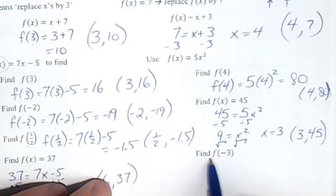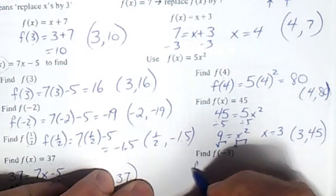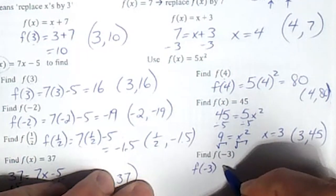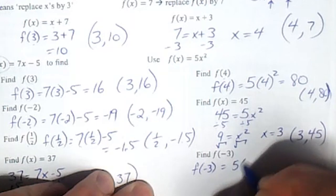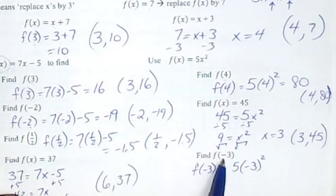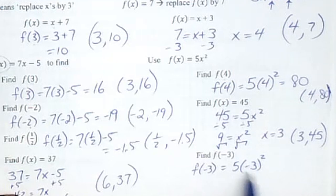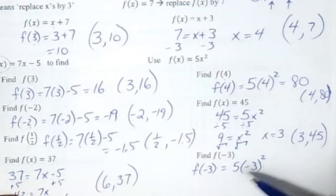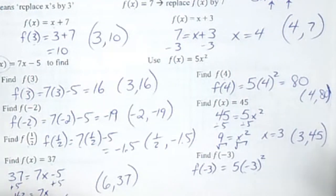And this last one, it's f of negative 3, so x is negative 3. With this one make sure when you use negative, put brackets around it. Both the negative and the 3 are getting squared: f of negative 3 equals 5 times negative 3 squared equals 5 times 9 equals 45, giving us (negative 3, 45).